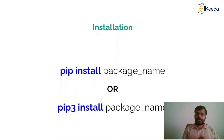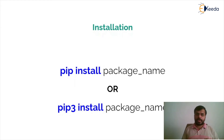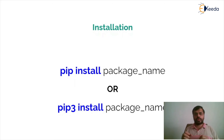So to do that we use the pip command. Pip is a Python package manager which allows us to install the package that we are interested in. So the command for it is pip install and the name of the package, or pip3 install and the name of the package.